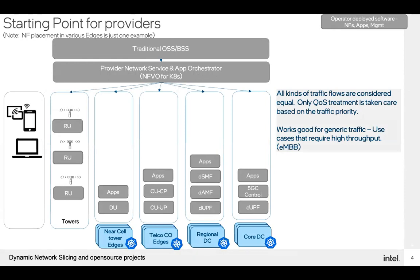This slide shows one view of various 3GPP 5G network functions across multiple types of edges. We believe the starting point for providers is to build upon what is happening in 4G — providing cellular access to mobile phones, data access to smartphones, laptops, and devices that need access to the internet. You have cell towers, and near cell towers is where DU often goes, along with some provider applications that help with DU functionality.